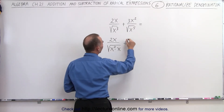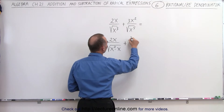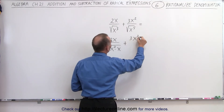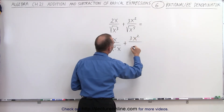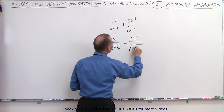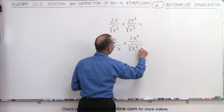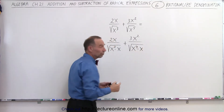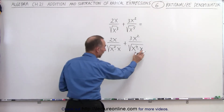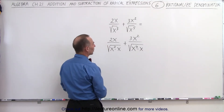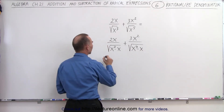We do the same for the second expression here: 3x squared divided by the square root of x to the fourth times x. Again, you can take the square root of x to the fourth and simply end up with an x in the denominator.